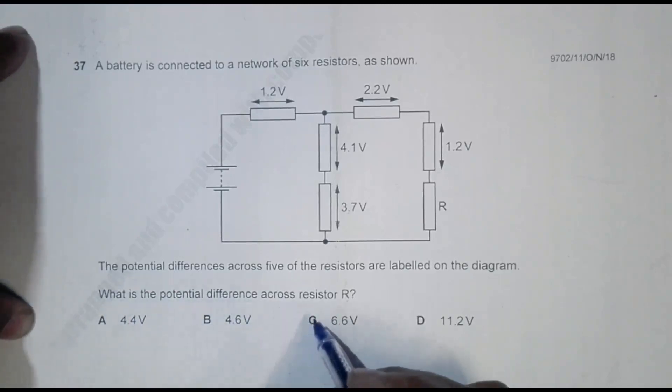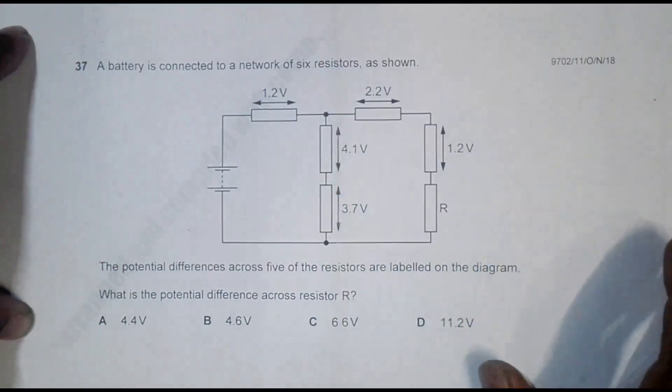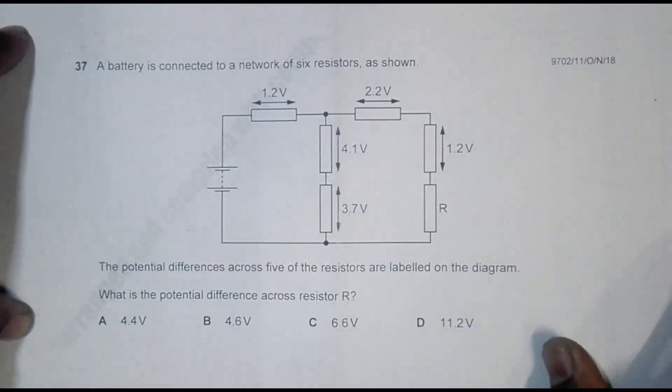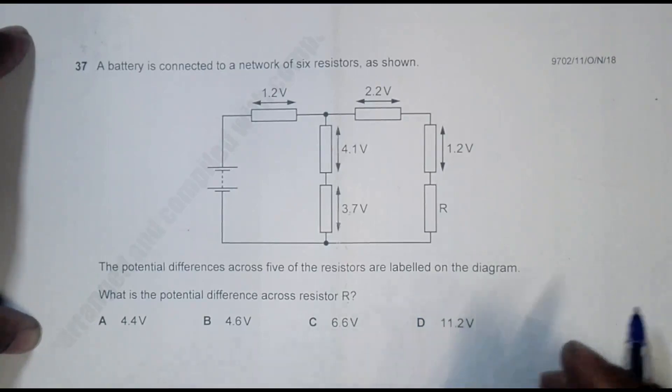So from these five values we have to find the value of the PD across the resistor R. In order to do this, what I know from the circuit is...